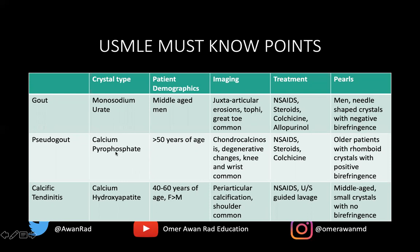Pseudogout, or calcium pyrophosphate deposition disease, typically occurs in older people greater than 50 years of age, male or female. If it's a younger person, you want to look for a systemic cause like hyperparathyroidism or hemochromatosis. You're looking for chondrocalcinosis and degenerative-type changes, particularly in the knee.